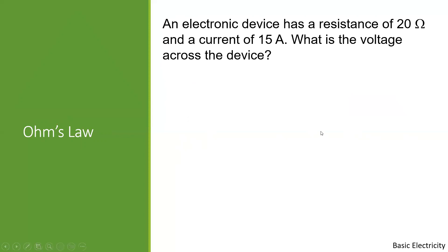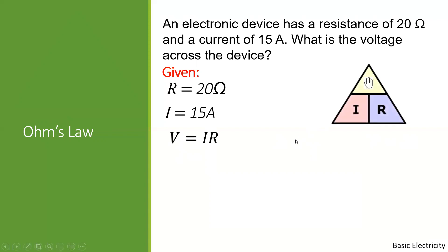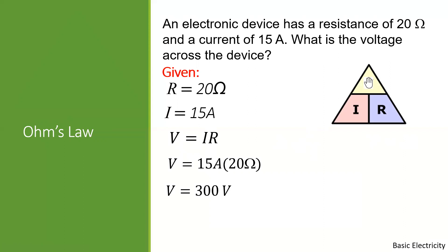Next problem: an electronic device has a resistance of 20 Ohms and a current of 15 Amperes. What is the voltage across the device? Given: R = 20 Ohms, I = 15 Amperes. The missing part is voltage, so V = I × R = 15 × 20 = 300 volts.